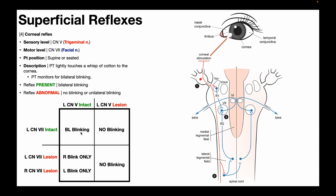To confirm: if we tactilely stimulate the left cornea but there is a lesion of the left trigeminal nerve, that nerve is what feeds tactile information to both the ipsilateral and contralateral facial nerves. So if there is a lesion in the trigeminal nerve, there will be no blinking at all, regardless of whether or not the facial nerves are intact or lesioned.